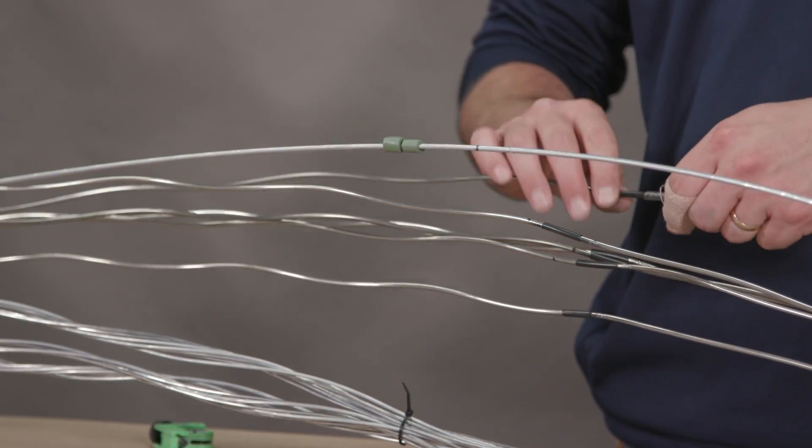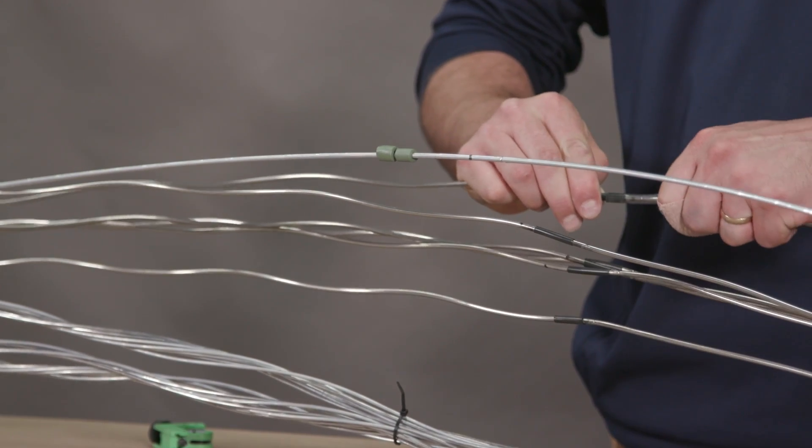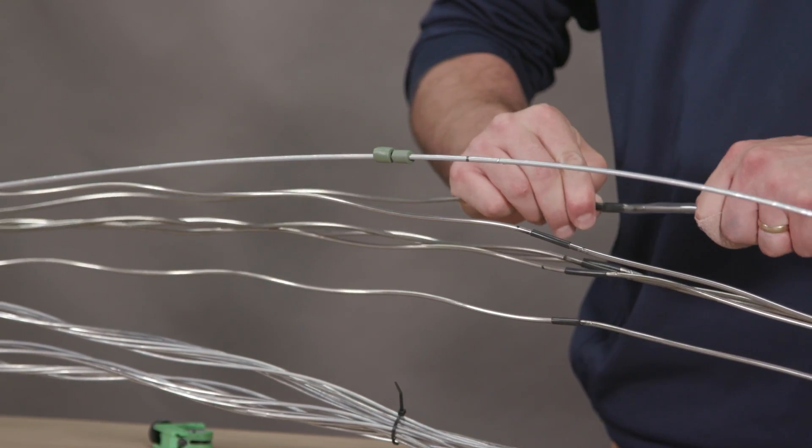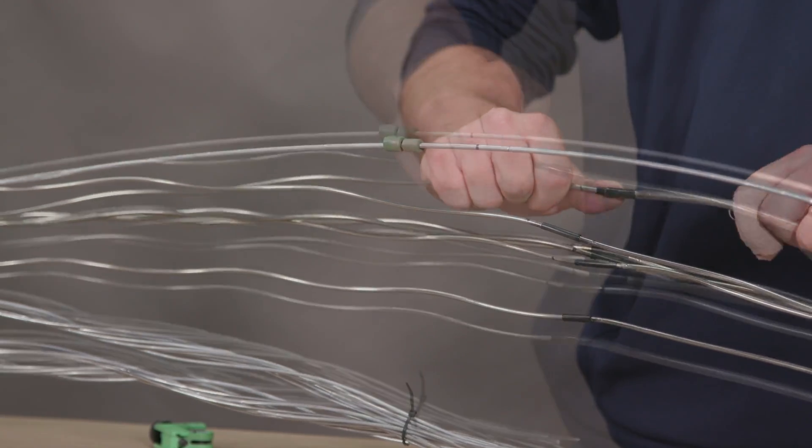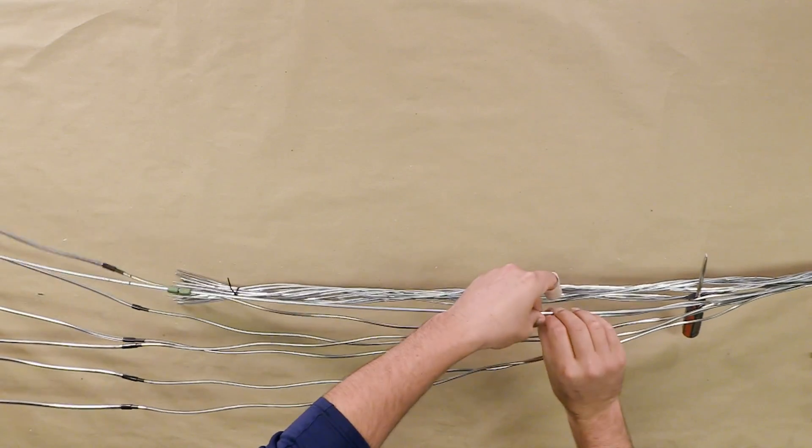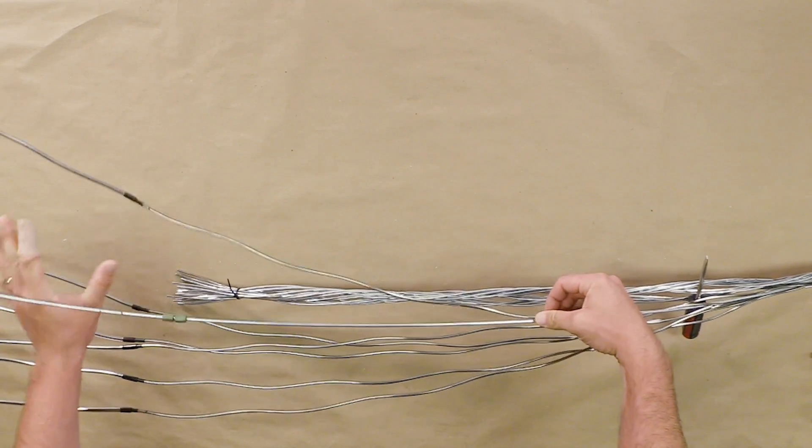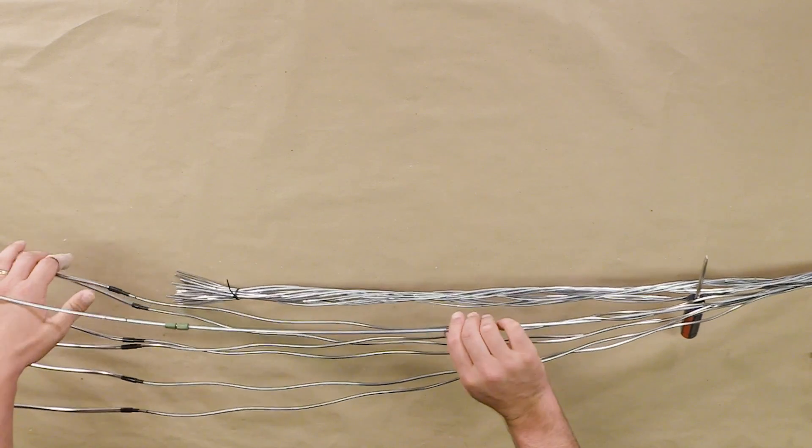Slide each clear furcation tube onto each buffer tube until covering the heat shrink tubes. Individually wrap each stainless steel buffer tube back onto the center member and space evenly around the green sealant.